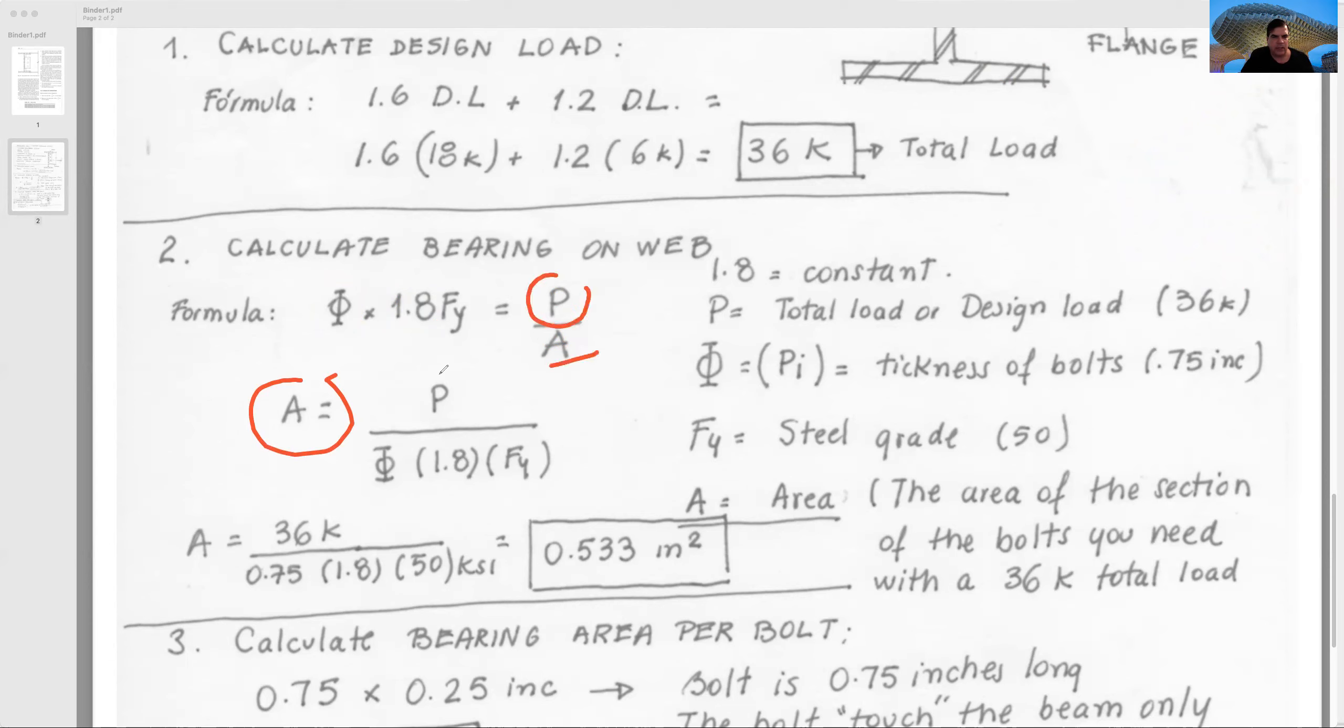P stays here, we take area to the side of the equation, these two elements pass to the inferior part, and we just need to resolve the formula. Area is equal to 36K divided by 0.75, that is the thickness of the bolts, times 1.8 that is a constant, times the type of steel that is 50 psi, and it will be 0.533 square inches. You have the same problem in the book. I just pre-wrote it to make it easy to understand, but you can check in the book.